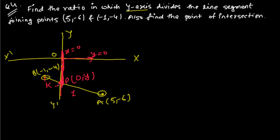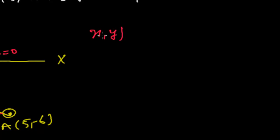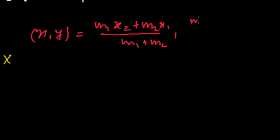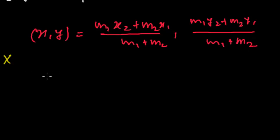We need to find the ratio in which it is cutting. Generally when a line is cut by the x-axis or y-axis, we take the ratio as k ratio 1. So this is the ratio k : 1. Now let me revise the section formula: x coordinate equals m1·x2 plus m2·x1 divided by m1 plus m2.